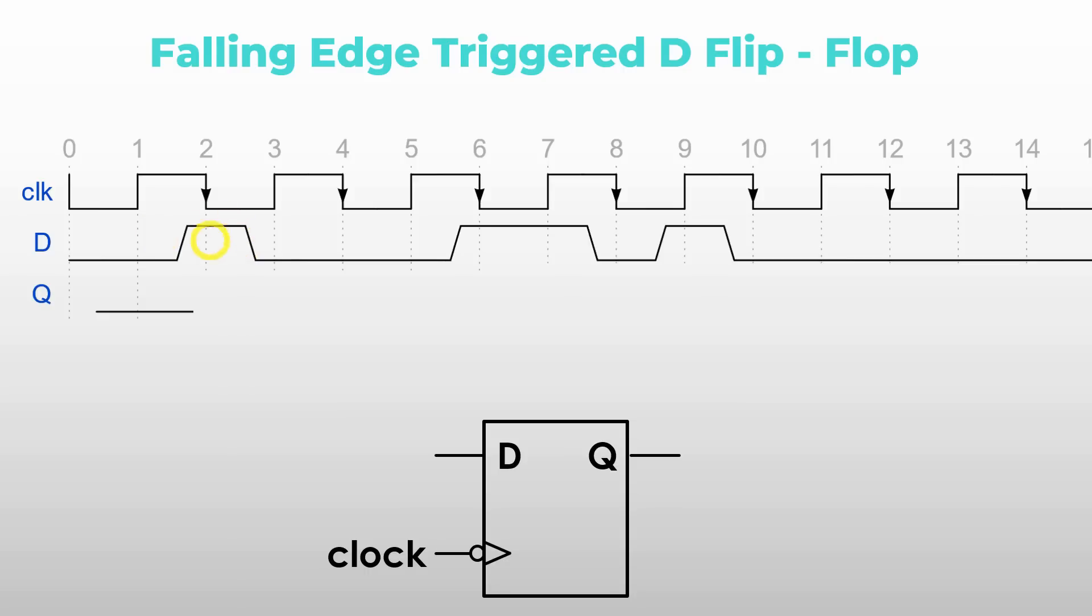So the input D is high here, which means that at this instant Q should go high. At this falling edge, D is high, so Q should be high. Now, D is low at this falling edge, so D should go low. And at this point, D should stay low. Notice that this is completely ignored. It doesn't matter what's happening in between the falling edges. The D can be whatever it wants in between, but if it doesn't change the state at the falling edge, the output Q won't change.